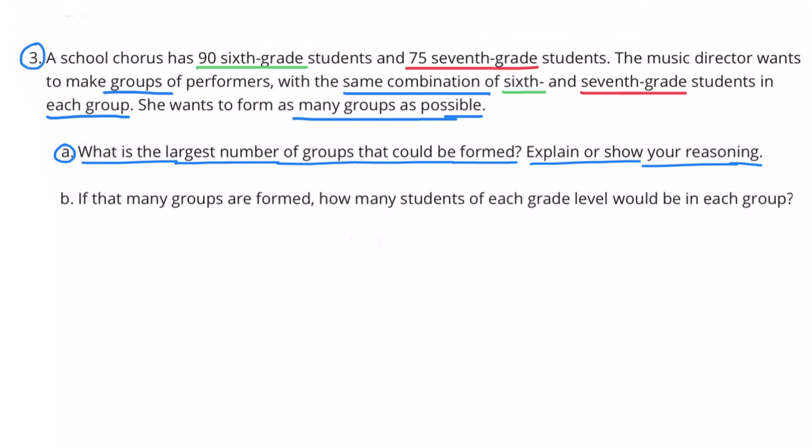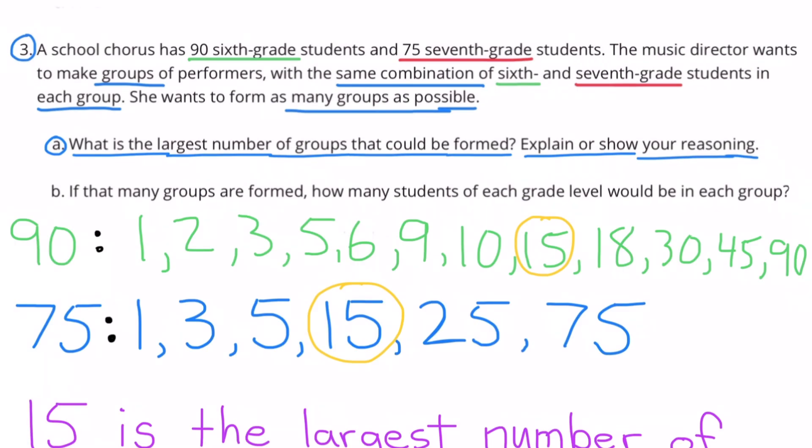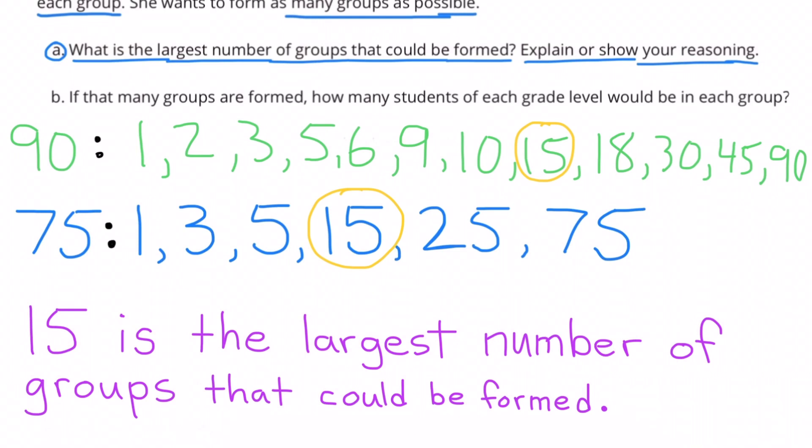3a. What is the largest number of groups that could be formed? Explain or show your reasoning. The first thing I did was write down the factors of 90 and write down the factors of 75. Next, I looked for the greatest common factor. And the greatest common factor of 90 and 75 is 15. 15 is the largest number of groups that could be formed.